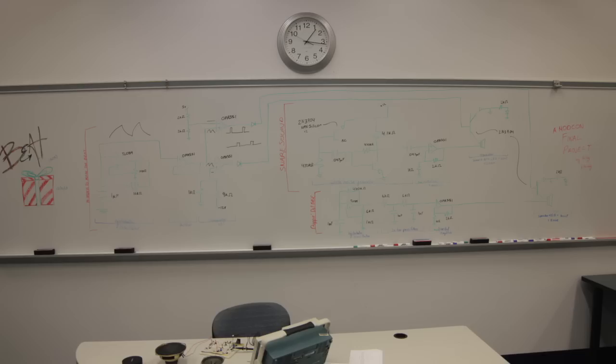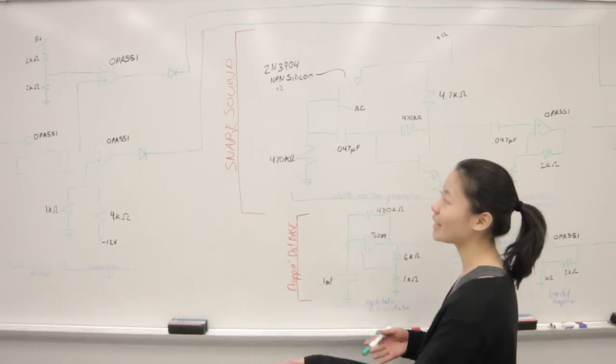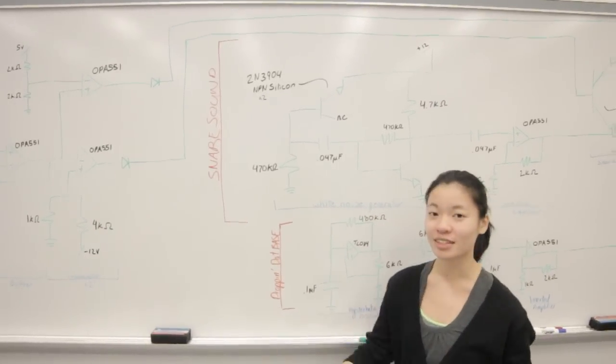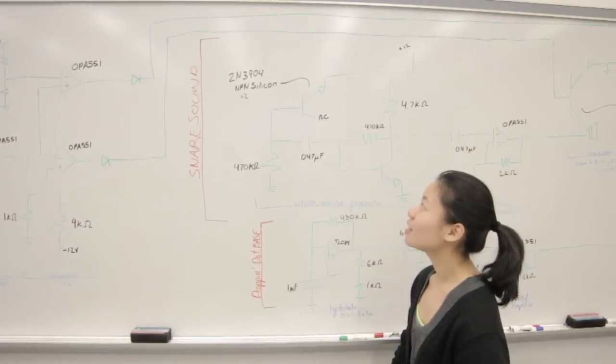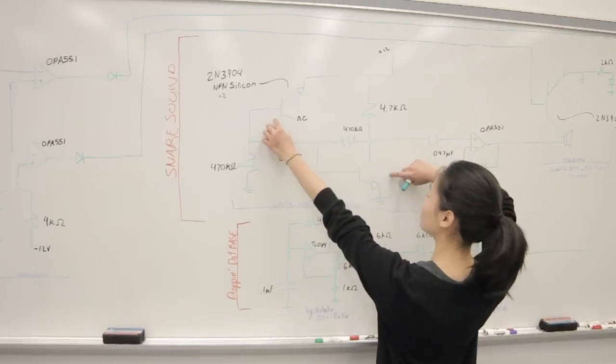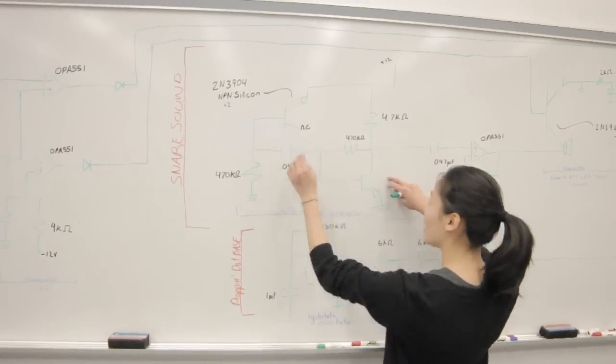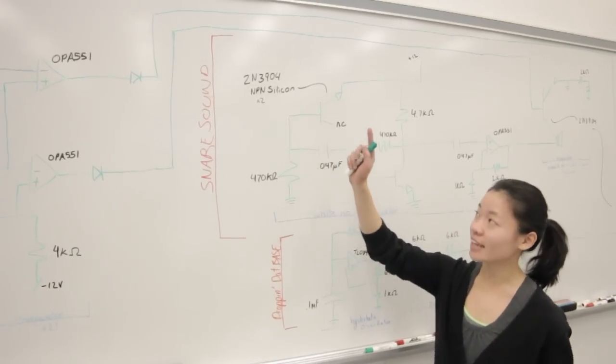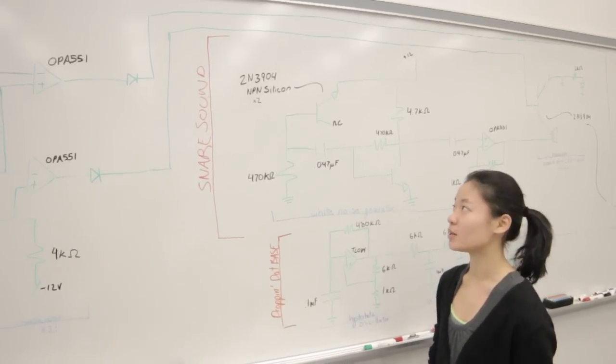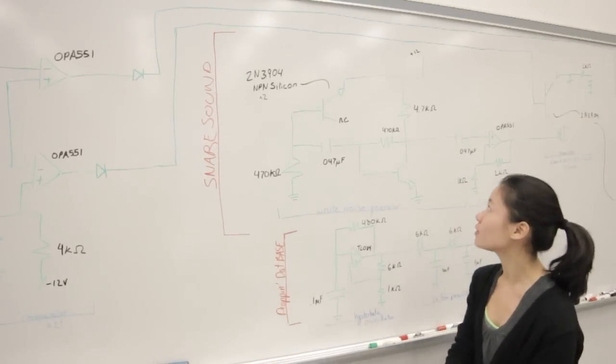On to the next thing. So this is our white noise generator, and this is part of the circuit that's going to make our snare sound in our beatbox. Our white noise generator basically has two important things, which are these two transistors right here. And then this transistor right here acts like a zener diode, which basically does funny things to the white noise to make it white noise.